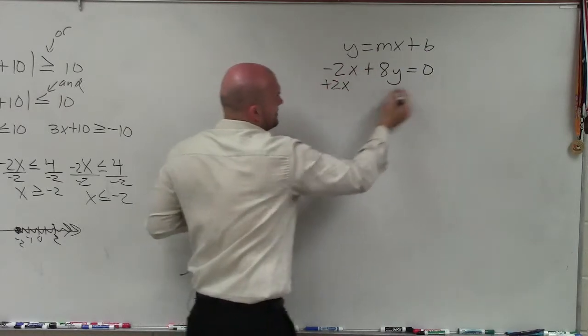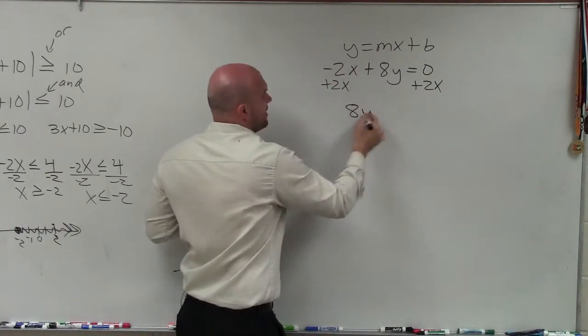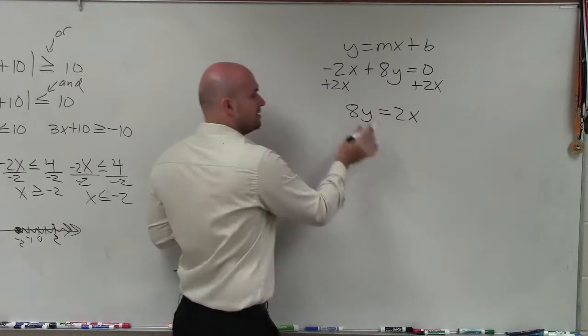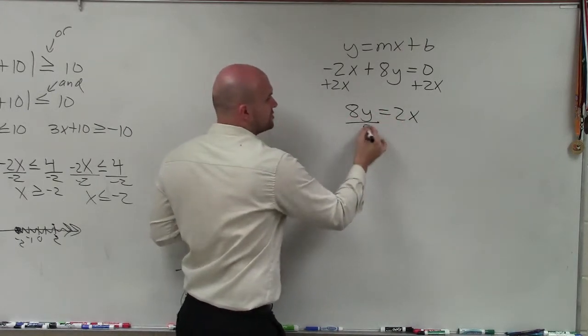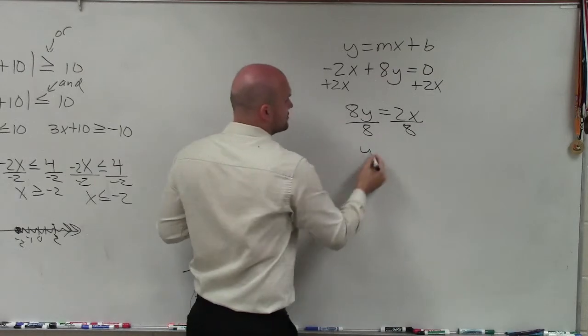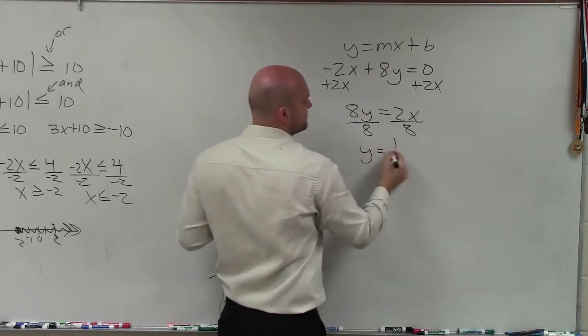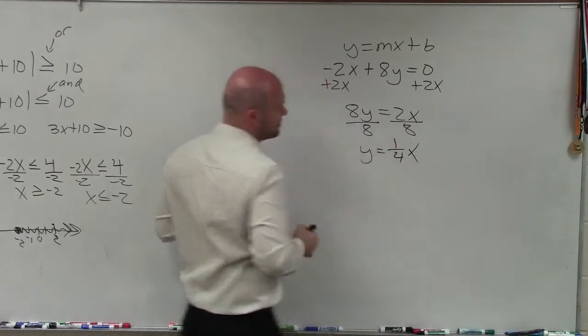So I'll add 2x to both sides. Now I have 8y equals 2x. Now to solve for y, I undo multiply by 8, so I divide by 8. So y equals 2/8 simplified is going to be 1/4 x.